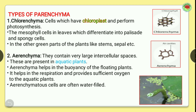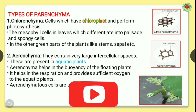The first type of parenchyma is chlorenchyma. The word 'chloro' means it has chloroplast in it, so from the word you can identify that it helps in the function of photosynthesis. Cells which have chloroplast and perform photosynthesis are called chlorenchyma. The mesophyll cells in leaves differentiate into palisade and spongy cells.